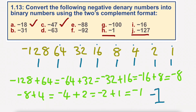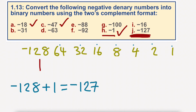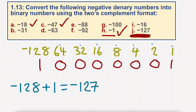Let's have a little look at J now. There's a pattern developing based on what we've just seen with H. So, minus 127. I've got to put this 1 in, remember. I start with minus 128. How do I get to minus 127? Well, basically, I add a 1, which equals minus 127. So with that in mind, I don't need any of those other values. All I need to do is add a 1 to it, and that will give me this answer here.